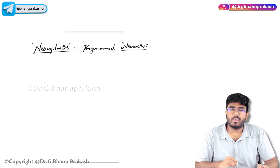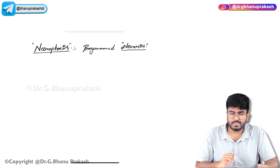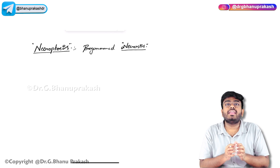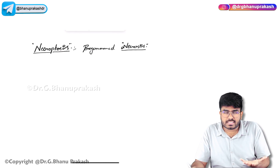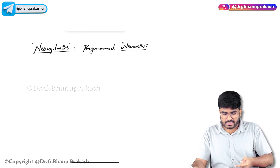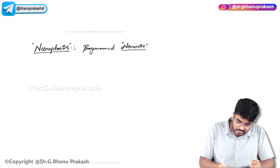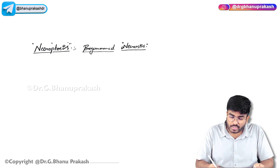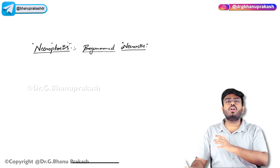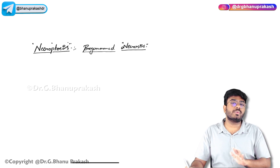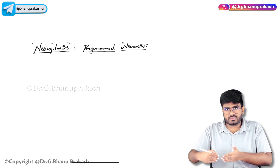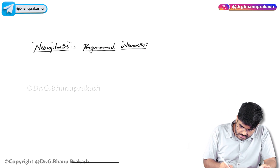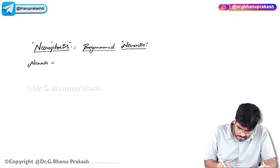If someone asks whether necroptosis is necrosis or apoptosis — it's a variant of necrosis. It's called a variant of necrosis because at the end of the day, cells are dying with damage to the cell membrane and leaking of cell contents, leading to inflammation. The morphological events resemble necrosis. It is called programmed because it is a programmed cell death — necrosis plus apoptosis.